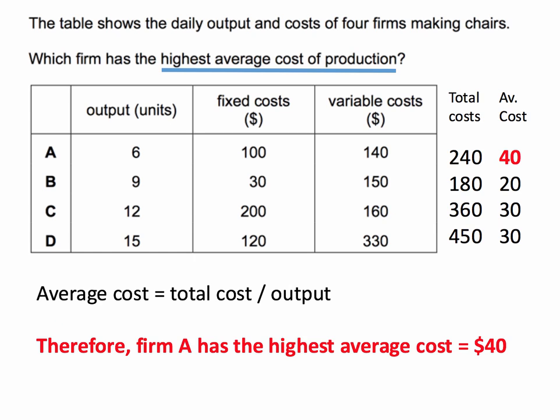Average cost is simply calculated as total cost divided by output, and of course total cost is the sum of fixed costs and variable costs. So this is a bit of data calculation here — we work out first of all the total costs.